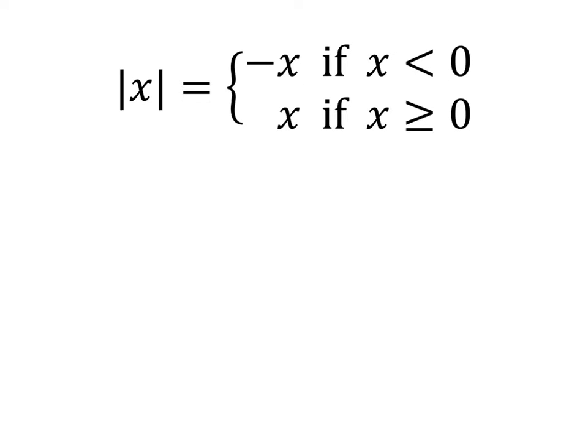The absolute value of x is either x or minus x. It's minus x if x is negative, and it's x if x is greater than or equal to 0.